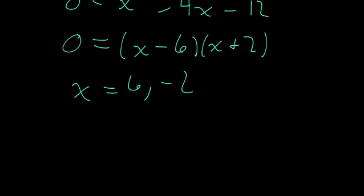But we're only told to worry about the area in the second quadrant. So that means we can disregard the 6 because we know that in the second quadrant x is negative.